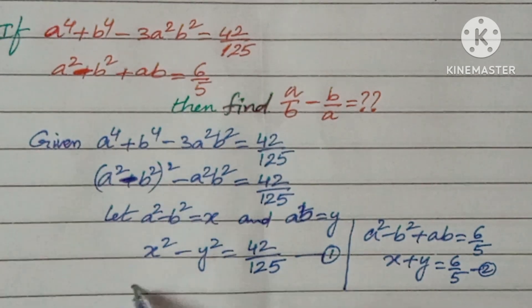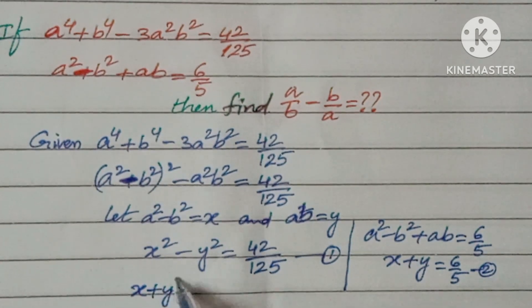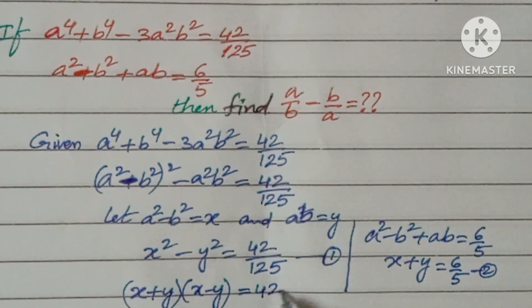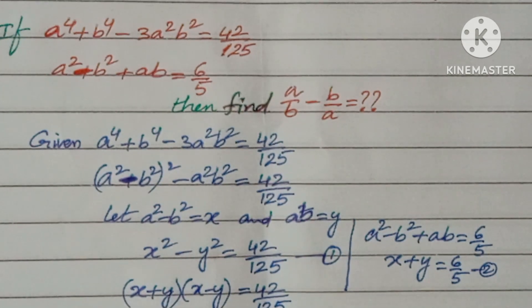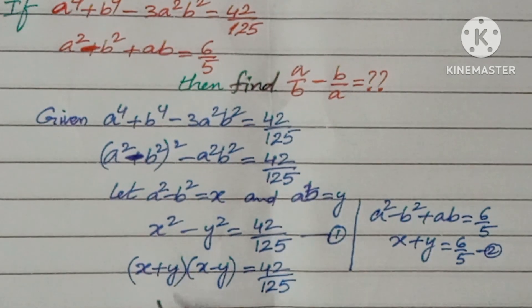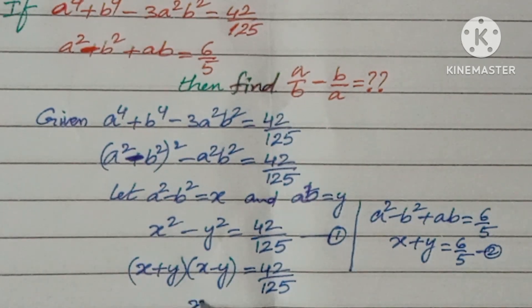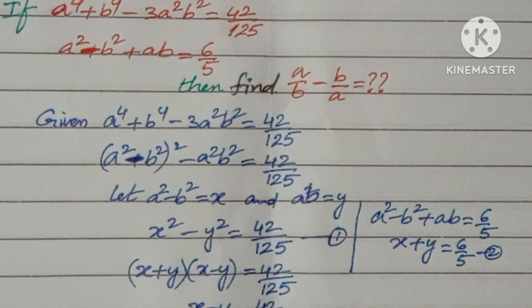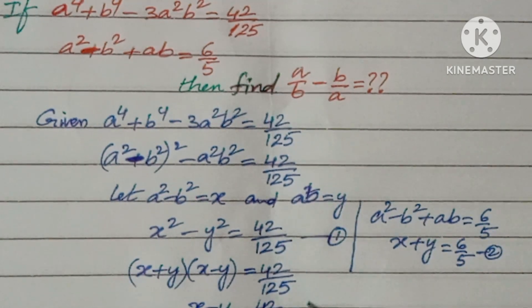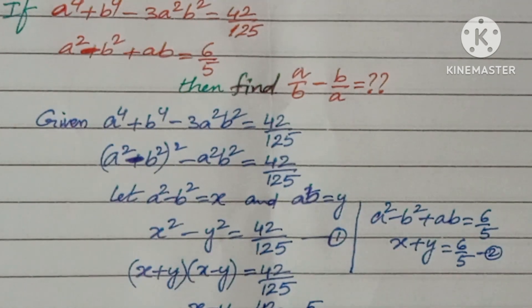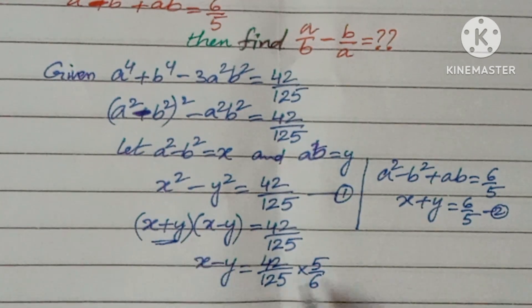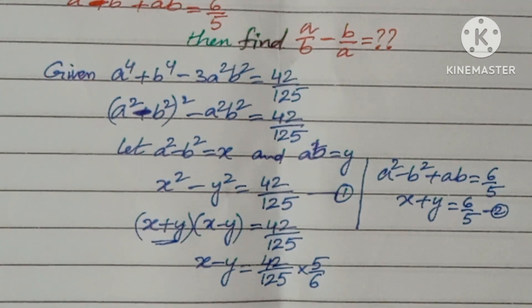Now, this can be written as (x + y)(x - y) = 42/125. Now, replace the value of x + y here. Then x - y will be 42/125 × 5/6. This value x + y is 6/5 so you are getting 5/6.